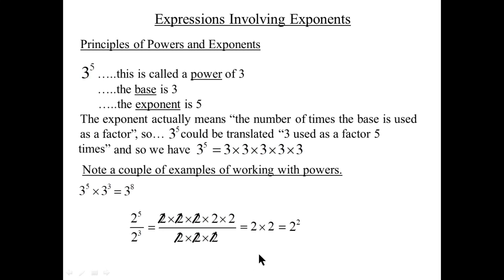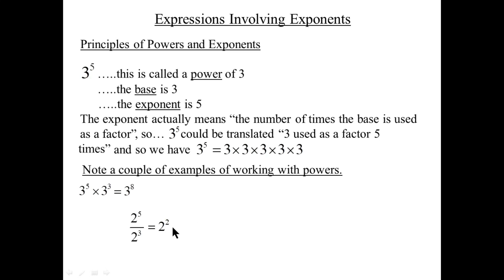Math people don't write all that out — we go straight to the answer. Two to the five over two to the three is two to the two. The shortcut: when you divide powers of the same base, keep the base and subtract the exponents. Keep the base two, subtract the exponents: five minus three is two.